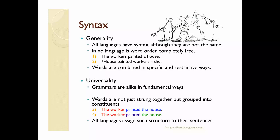Despite cross-linguistic differences, grammars are alike in fundamental ways, and this is also true of syntax across languages. When words are combined to form sentences or phrases, they are not just drawn together in a linear manner, but are grouped into constituents. For example, in the sentence 'the worker painted the house,' 'the worker' is a constituent that functions as the subject, and 'painted the house' is the predicate. Within this predicate, we can isolate 'painted,' which is the verb, from 'the house,' which serves as the direct object. All languages assign hierarchical structure to their sentences.